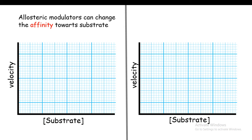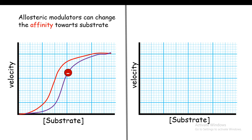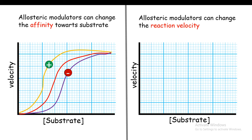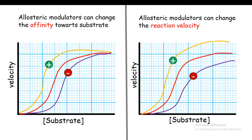Allosteric modulators can change the affinity towards a substrate and also change the reaction velocity. In the first case, the red curve represents the enzyme without any allosteric modulator. With the binding of an allosteric activator or inhibitor, the curve changes differently — the maximum velocity is not much changed, but the affinity has been changed. In the second case, the allosteric modulator changes the reaction velocity dramatically: decreased for an allosteric inhibitor and increased for an allosteric activator. In short, allosteric modulators can work in both positive and negative fashion to modulate affinity and reaction velocity.